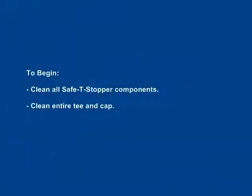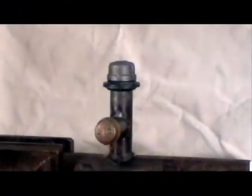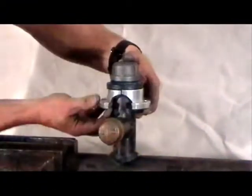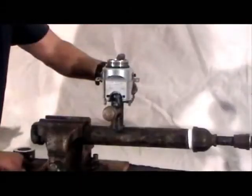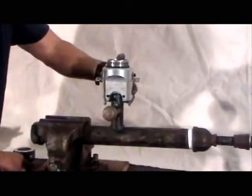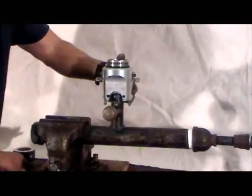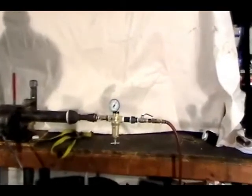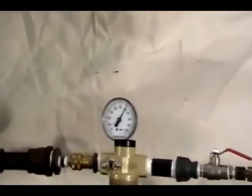To begin, clean all components of the safety stopper equipment prior to use. Clean the area of the tee where the beveled O-rings, half collars, and housing will be positioned, removing all corrosion and scale so that the beveled rubber O-rings will seal properly. Now we will show the entire operation on a typical inch and a quarter service operating at 60 PSI.